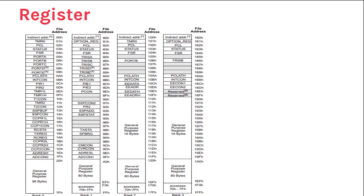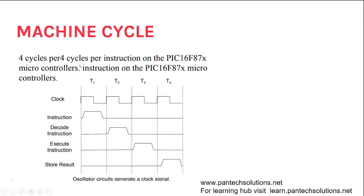These are the registers we will cover in detail in upcoming sessions: Port A register, TRISB, TRISC for data direction registers, interrupt registers, timer registers, and ADC registers. The banks contain addresses and registers along with special function registers. We will go into much more detail in the upcoming sessions.